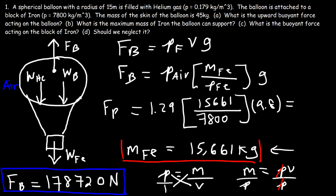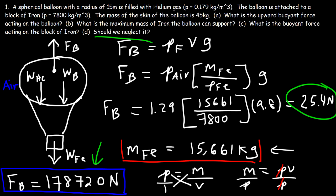The buoyant force acting on the block of iron is 25.4 newtons. As you can see, this is much less than the buoyant force on the balloon, so we can neglect it. It won't significantly change the mass of iron the balloon can support, so we don't need to worry about it in this problem.